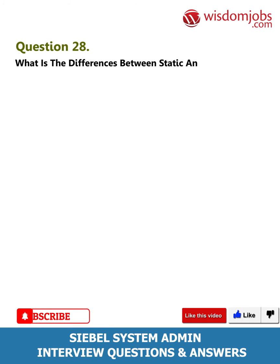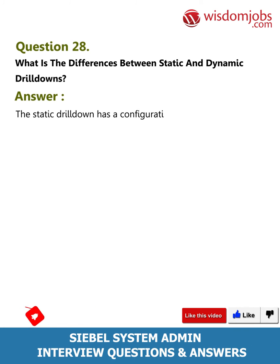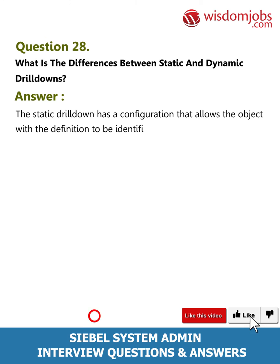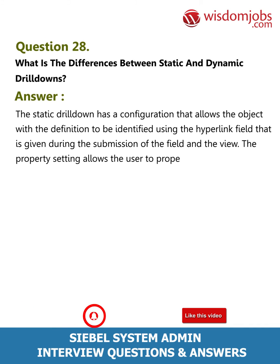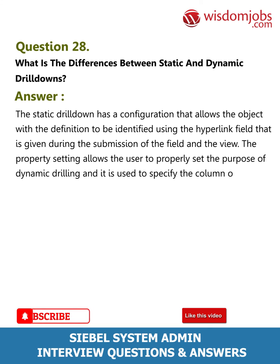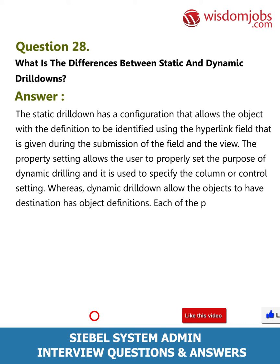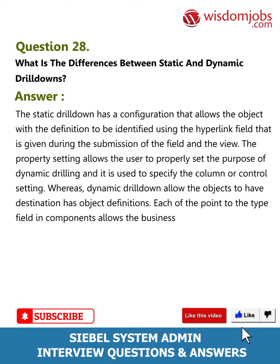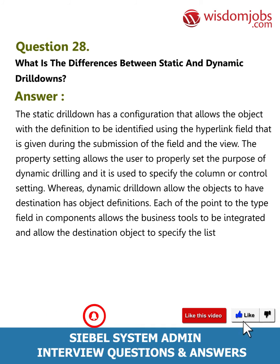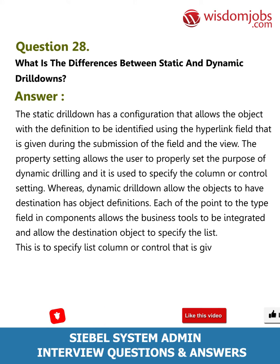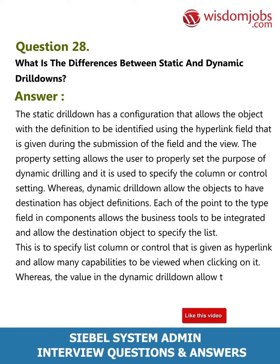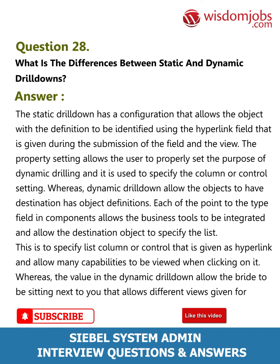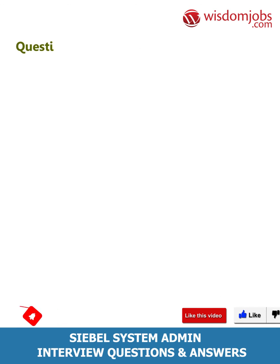Question 28: What are the differences between static and dynamic drill downs? Answer: Static drill down has a configuration that allows the object with the definition to be identified using the hyperlink field given during field submission. The property setting allows the user to set the purpose of dynamic drilling and specifies the column or control setting. Whereas dynamic drill down allows objects to have destination object definitions, each pointing to the type field in components to integrate business tools. The value in the dynamic drill down allows different views for further actions.